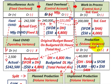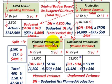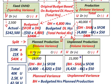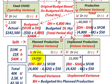We can break the production volume variance down between planned and unplanned production. For Case A — planned production — we take denominator hours of 4,800 and compare to budgeted hours of 4,420. The difference of 380 hours times the standard fixed overhead rate of $50 gives us $19,000 unfavorable for planned production volume variance.